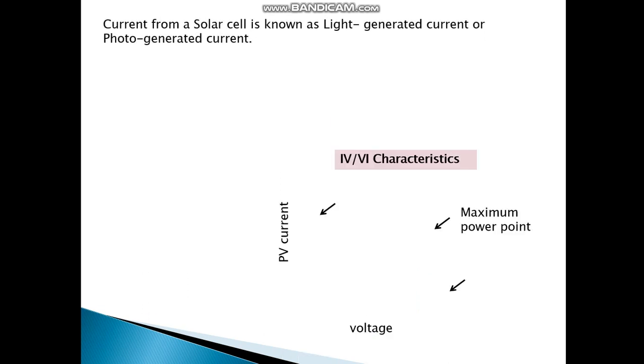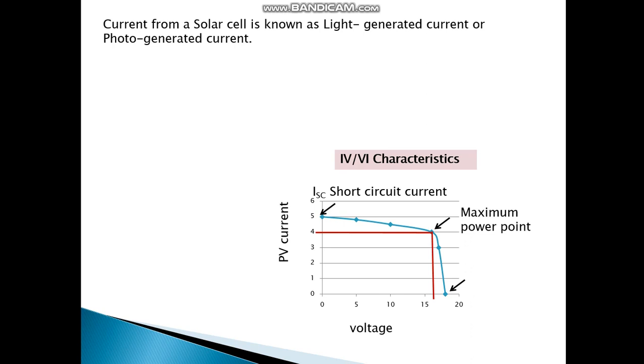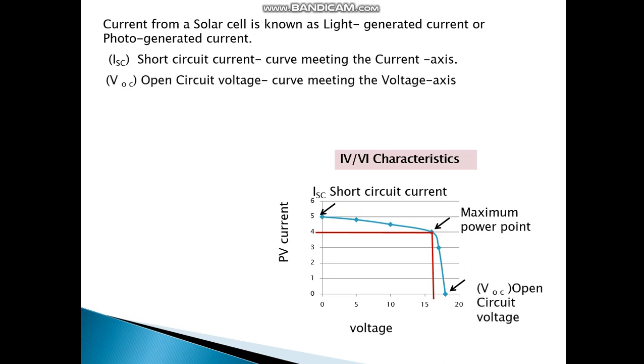Now the current from the solar cell is known as light generated current or photogenerated current. So that's the IV characteristics or VI characteristics of a solar cell. That's the short circuit current. The short circuit current is the curve meeting the current axis. The open circuit voltage is the curve meeting the voltage axis. In both cases, power delivery is zero.